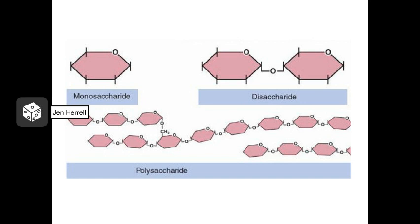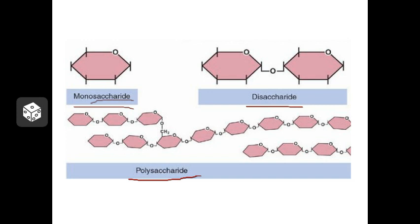Carbohydrates have monomers, dimers, and polymers. In this group, those terms are accompanied by the word "saccharide". So the monomers are called monosaccharides, the dimers are disaccharides, and the polymers are called polysaccharides. Carbohydrates can exist either as chains or as rings — the chain has folded over on itself into a ring shape, and that's another characteristic you can look for when examining molecules.